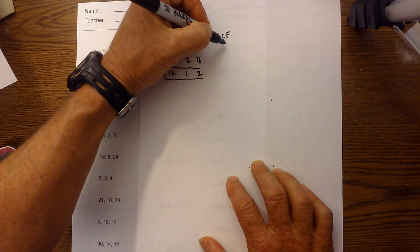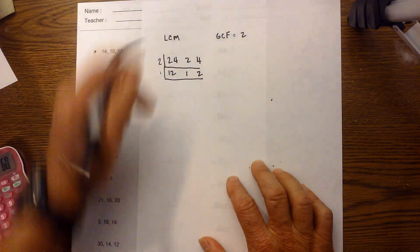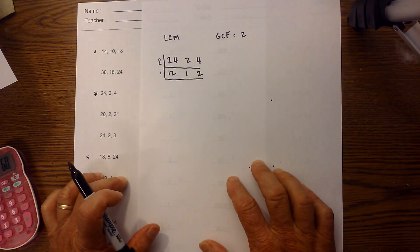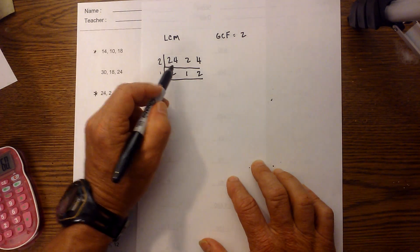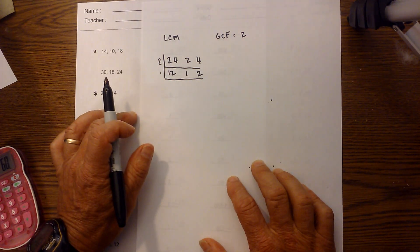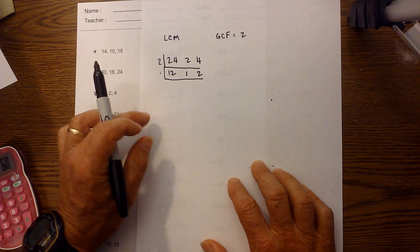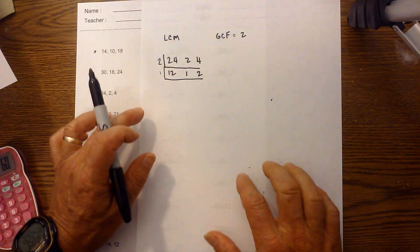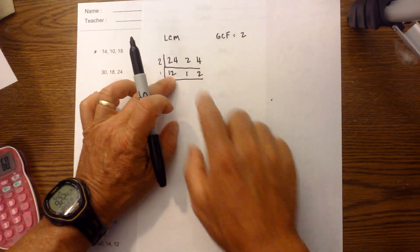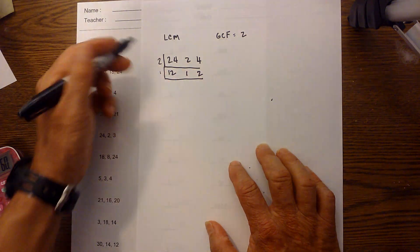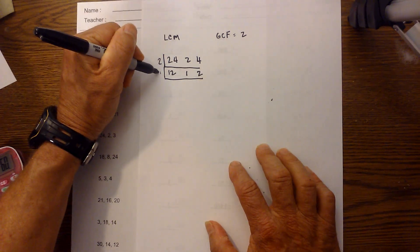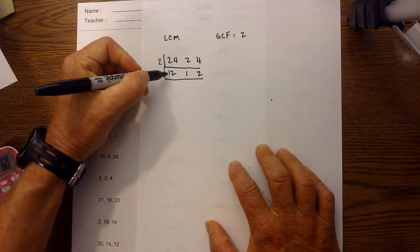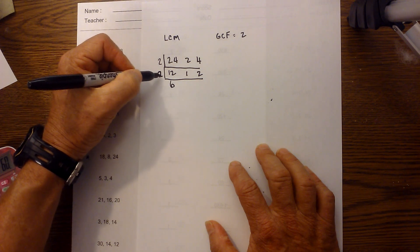Now to find the LCM when you have three problems, you've got to look at it a little bit different. You try to look for two numbers that will divide evenly into each other as pairs. I know 2 will go into 12, so I'm going to write 2 on the outside.